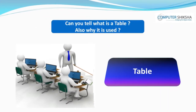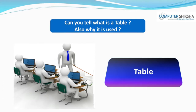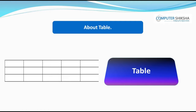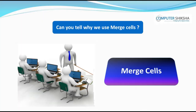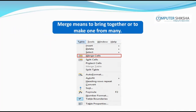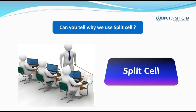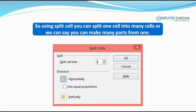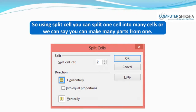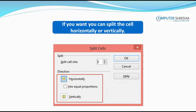Can you tell what is a table and why it is used? A table is made by rows and columns — it looks like your math notebook. Merge means to bring together or to make one from many; we use merge cells to merge the contents of two or more cells into one. Split means to make into many parts; using split cell, you can split one cell into many cells, either horizontally or vertically.